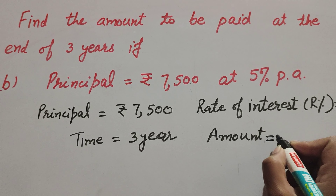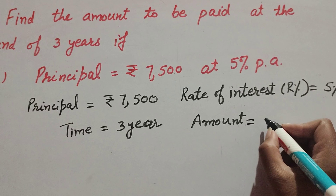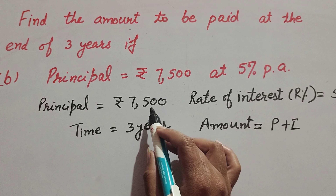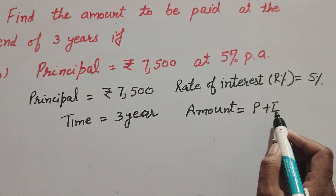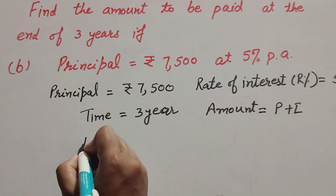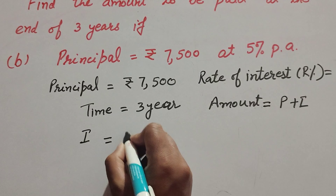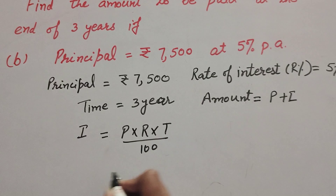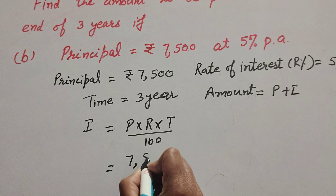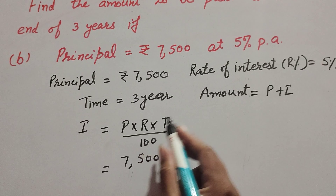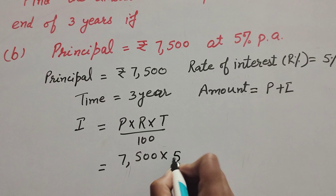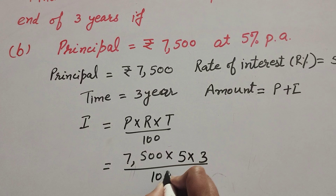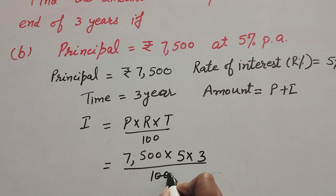The amount paid at the end of three years is equal to principal plus interest. The principal is given, so we need to find the interest. The formula to find interest is: I = P × R × T / 100. Here P is principal (7500), R is rate of interest (5%), and T is time (3 years) over 100.